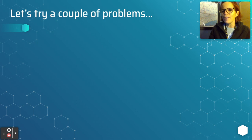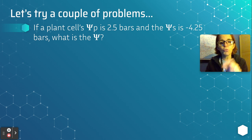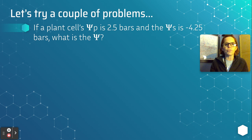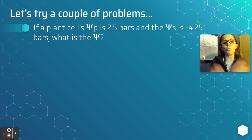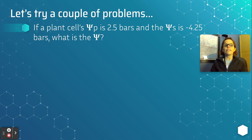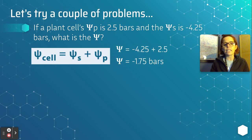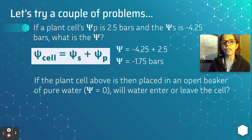Let's try a couple of problems. This first problem is going to be wickedly easy. If a plant cell's pressure potential is 2.5 bars — that's the pressure the cell wall is pushing on the water inside — and the solute potential is always negative, at negative 4.25 bars, what's the overall water potential? That's just the pressure potential plus the solute potential. Put them together: negative 1.75 bars. That was really simple — we just added two numbers.